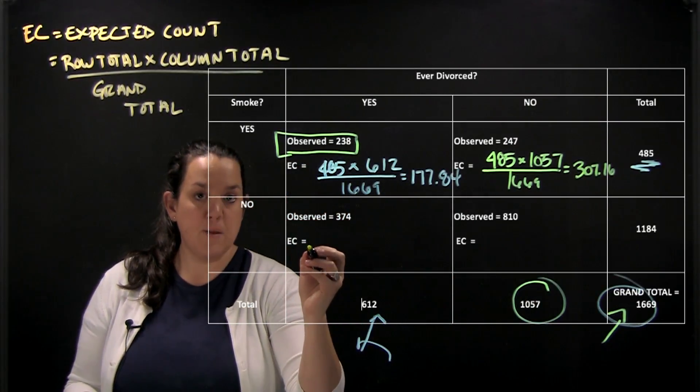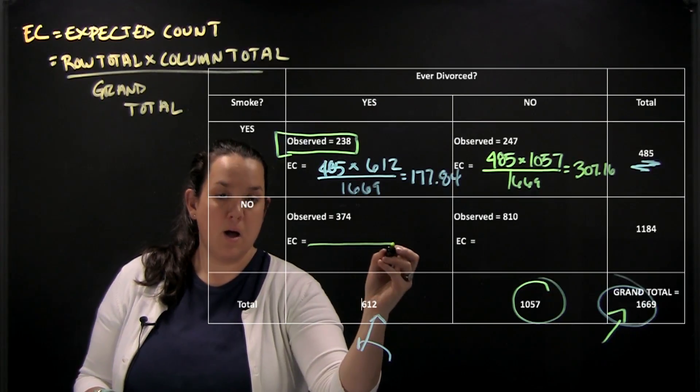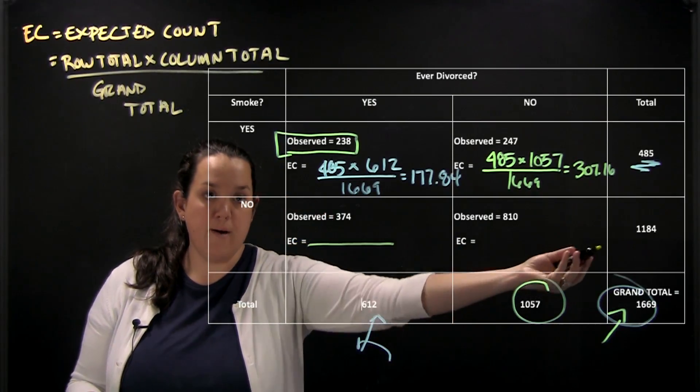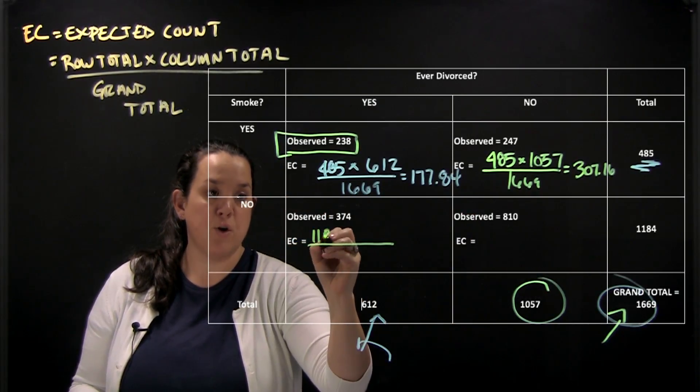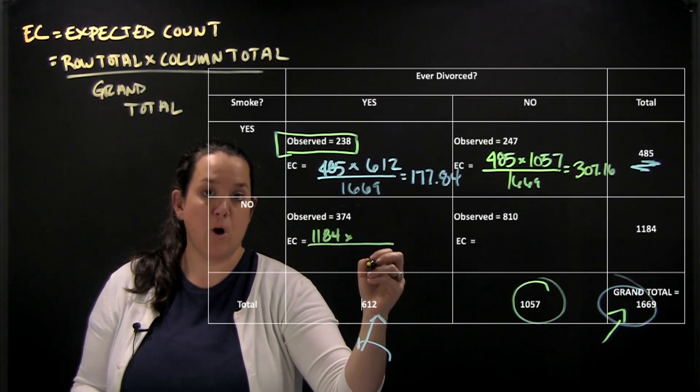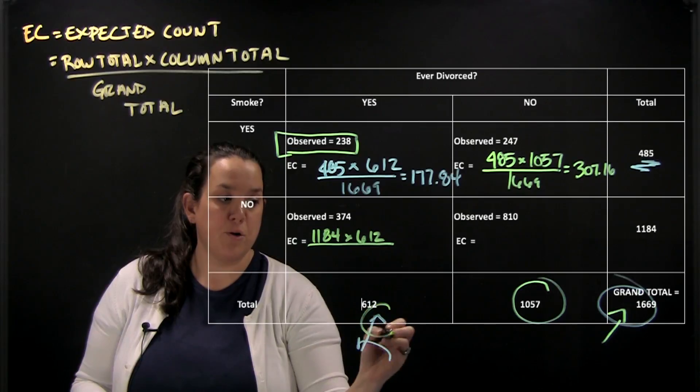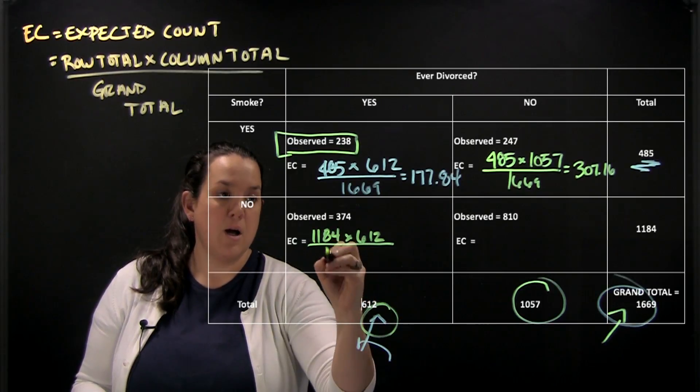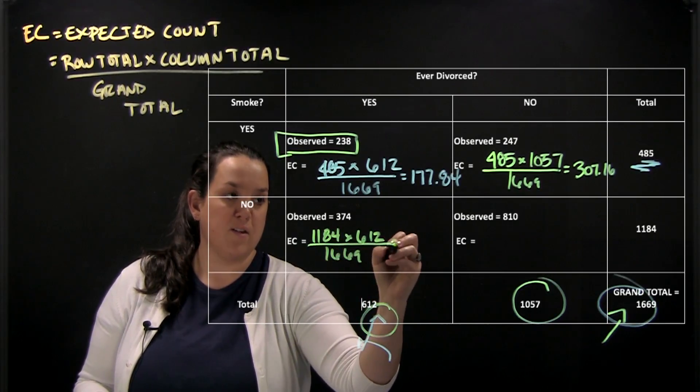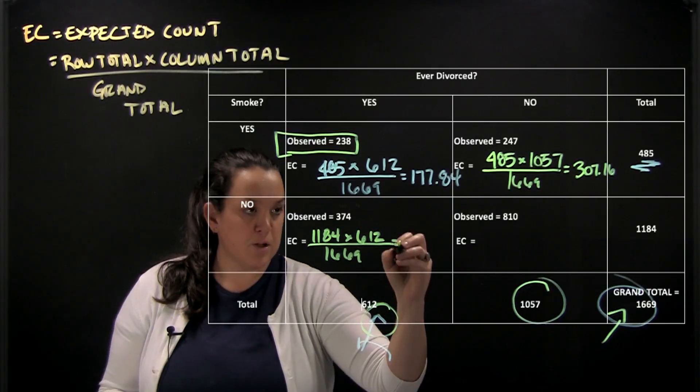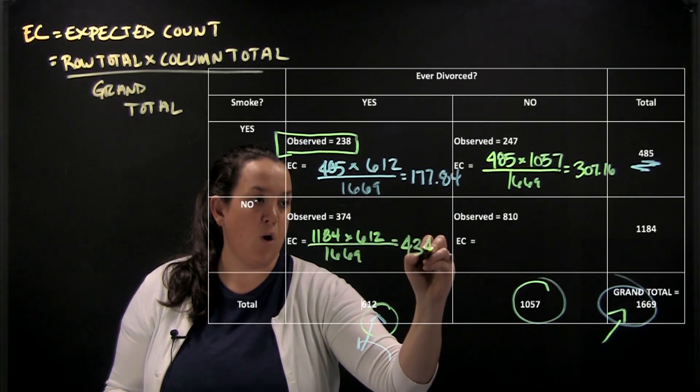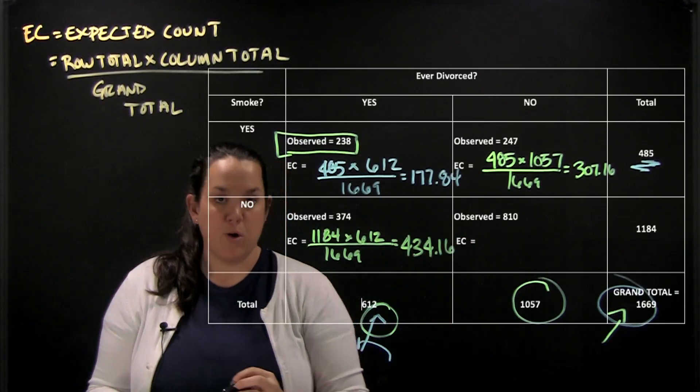So then finally in this bottom cell or the bottom row we have 1184. So we have a new row total because we're in a new row. I will have 612 as my column total which is shown down here and again the 1669. So this would give me an expected count of 434.16.